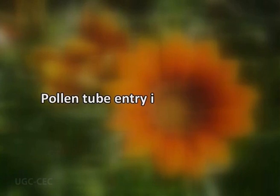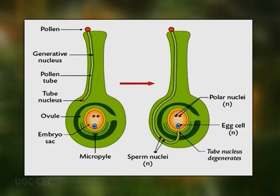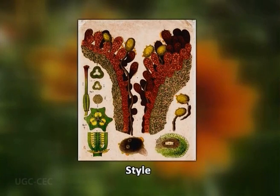Now we come to the stage where the pollen tube has reached the ovule, and we will see how the pollen tube will enter into the ovule. The pollen tubes, after growing through the style, reach the ovule and find their way into it. Studies of pollen tube growth in many species have provided evidence in support of some chemotropic factors governing the pollen tube guidance.